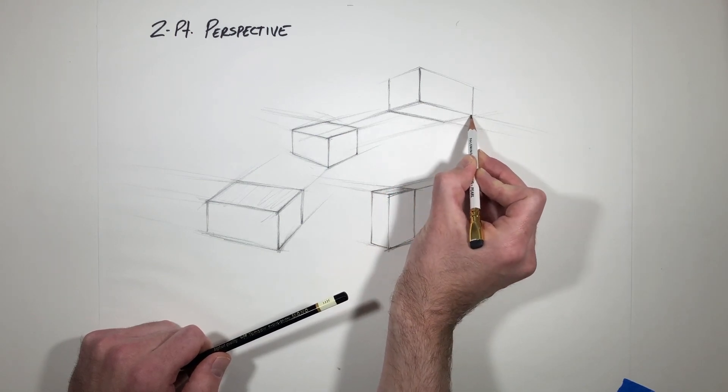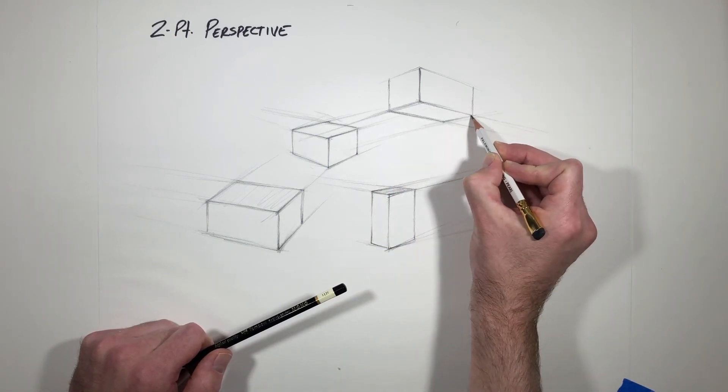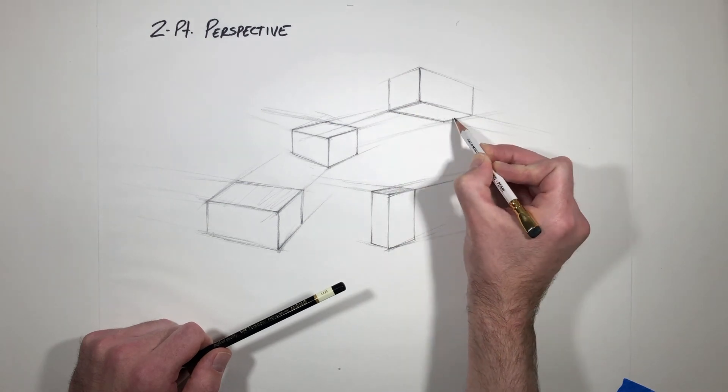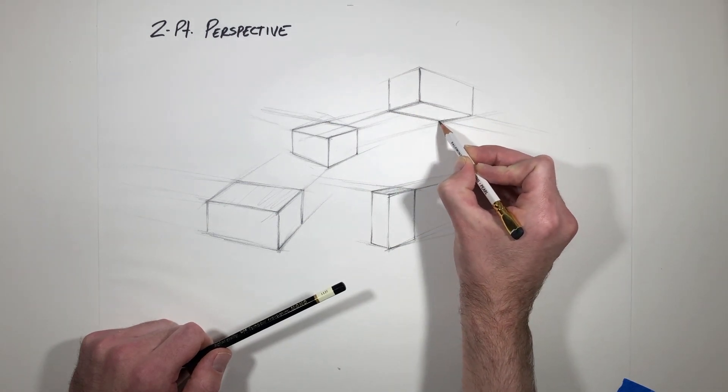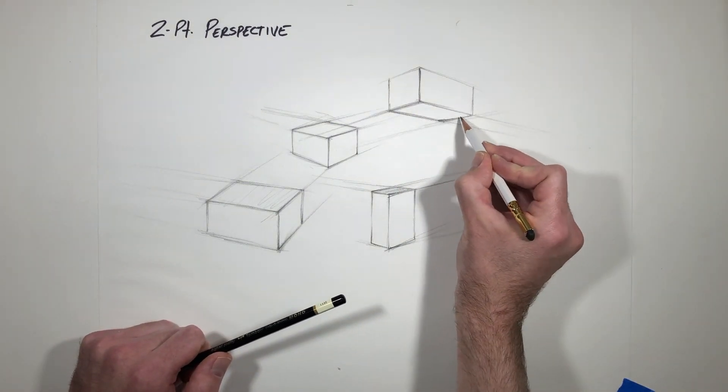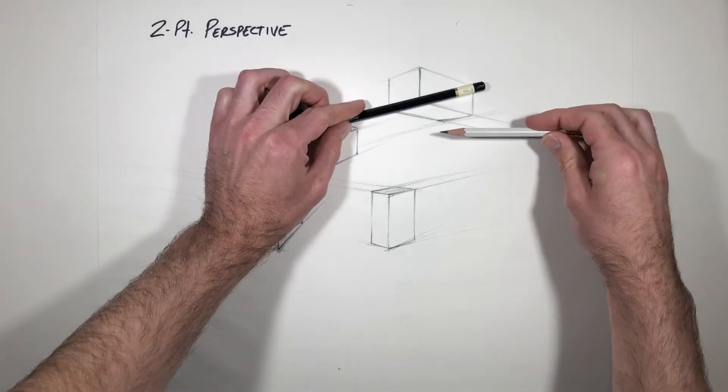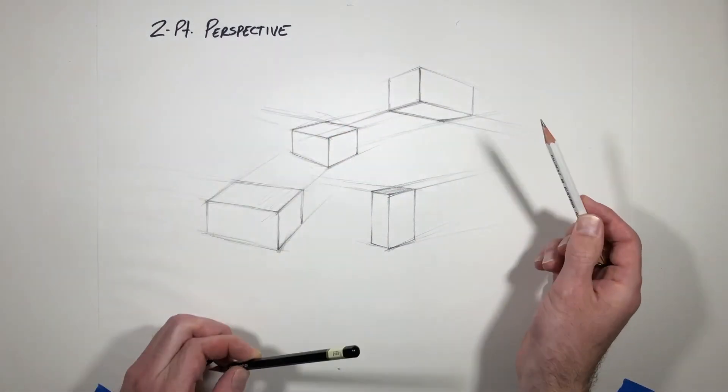So feel free, you don't have to find the actual vanishing point. But continue a few inches beyond your cube, and you'll probably find it makes those shapes more accurate in the end. Once again, yeah, it feels like those are going to connect. That's good.